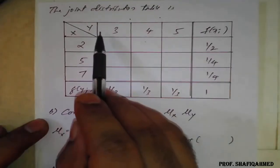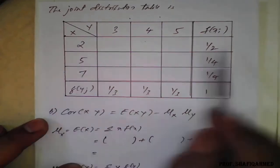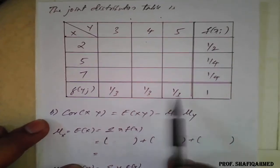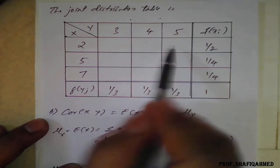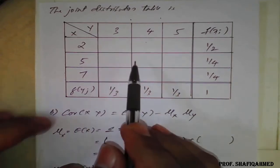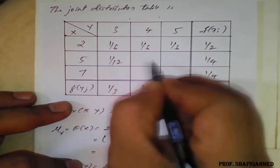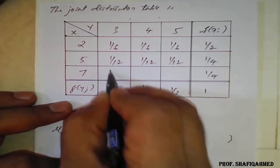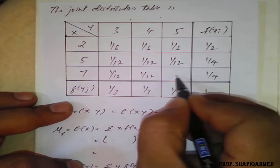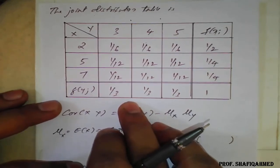We will now see the table. The table has Y values 3, 4, 5 with probabilities 1/3, 1/3, 1/3 and X values 2, 5, 3 with probabilities 1/2, 1/4, 1/4. We fill in J(1,1) through J(3,3): the first row gets 1/6, 1/6, 1/6; the second row gets 1/12, 1/12, 1/12; and the third row gets 1/12, 1/12, 1/12. This completes the joint probability distribution table — result A.